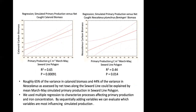We did an analysis of each individual year's primary production against the calanoid carbon biomass for that year along the Seward line. Simulated production could explain about 65 percent of the variance in the calanoid biomass and about 44 percent of the variance in the copepod biomass. We then used multiple regressions to characterize the processes affecting primary production and iron concentration by sequentially adding variables, allowing us to evaluate which variables are most influential to the simulated production and iron concentration.